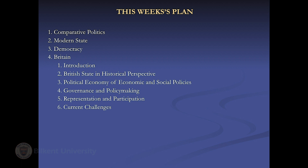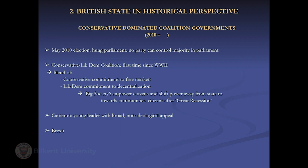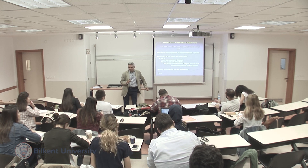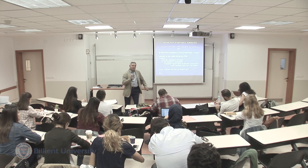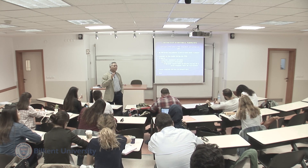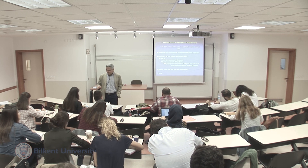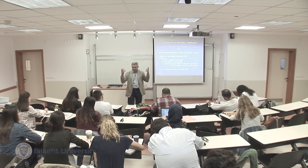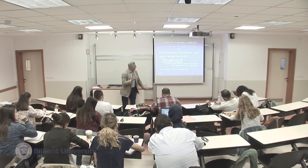Where did we leave off? We did talk about New Labour and Third Way, but we didn't talk much about the conservative-dominated coalition under David Cameron and Nick Clegg, which was formed in 2010. The election on May 10 was a surprise for British citizens because it did not produce a majority in parliament. No party had a majority of seats — this is what we call a hung parliament.